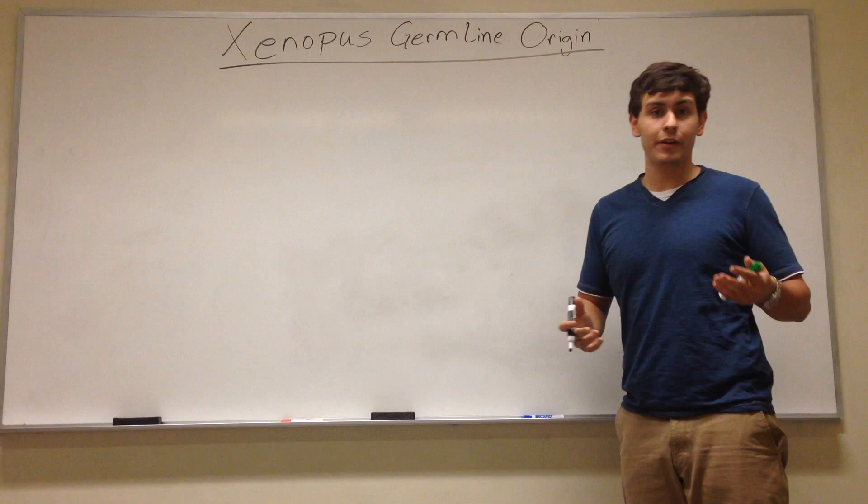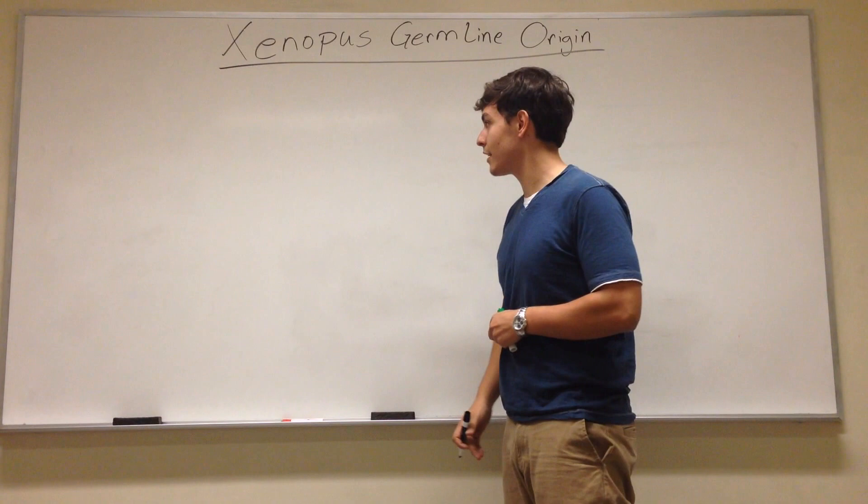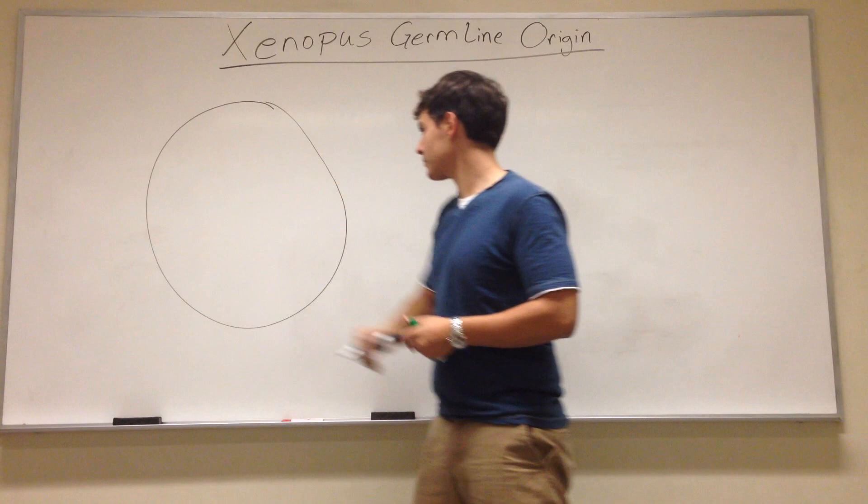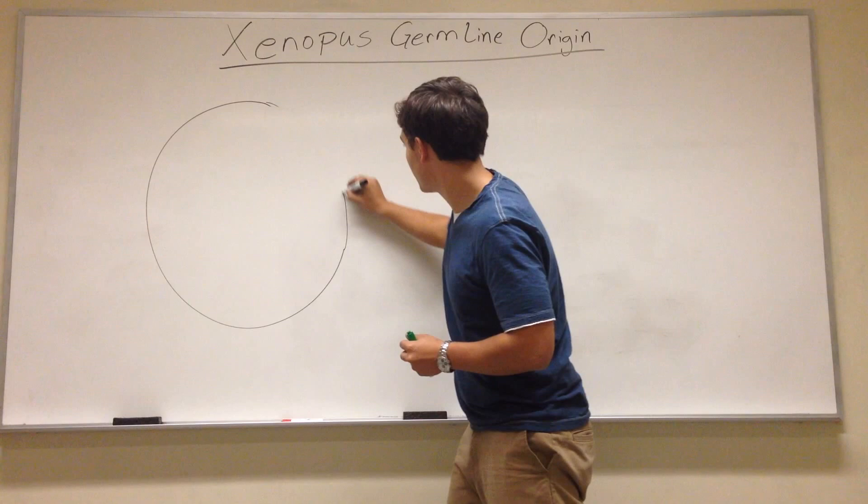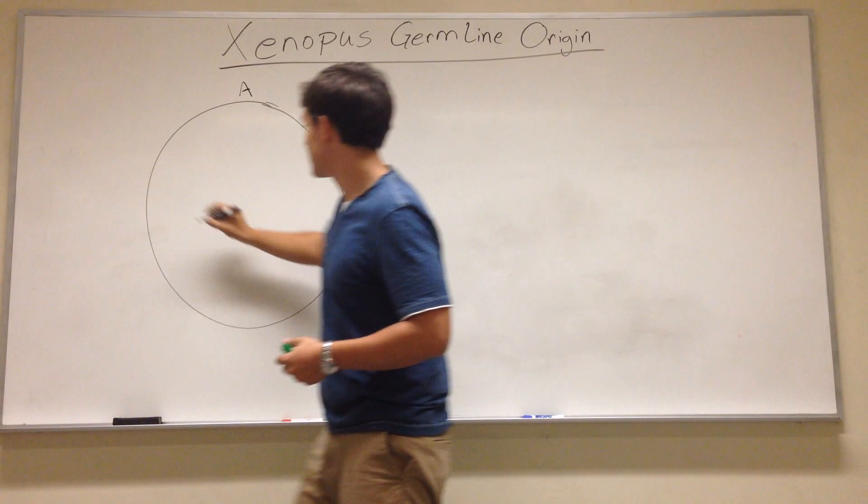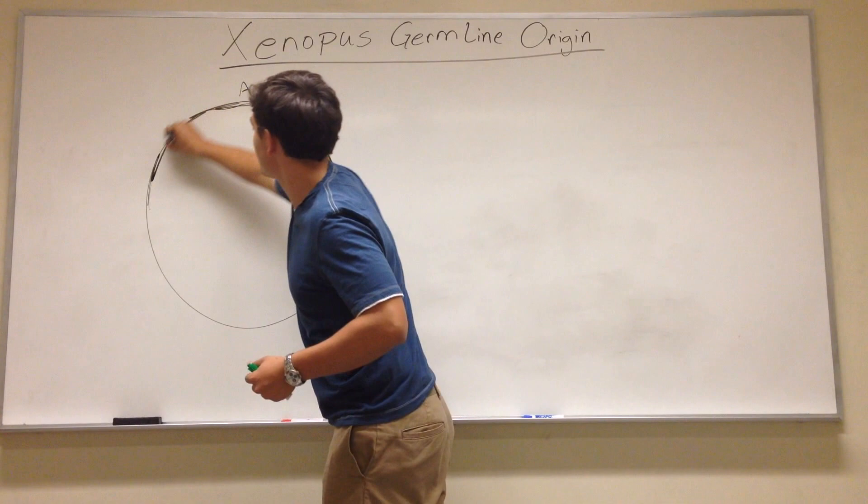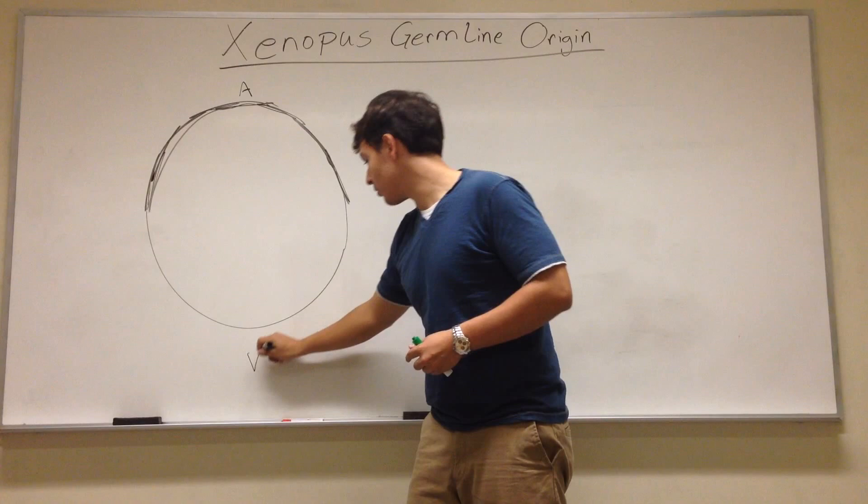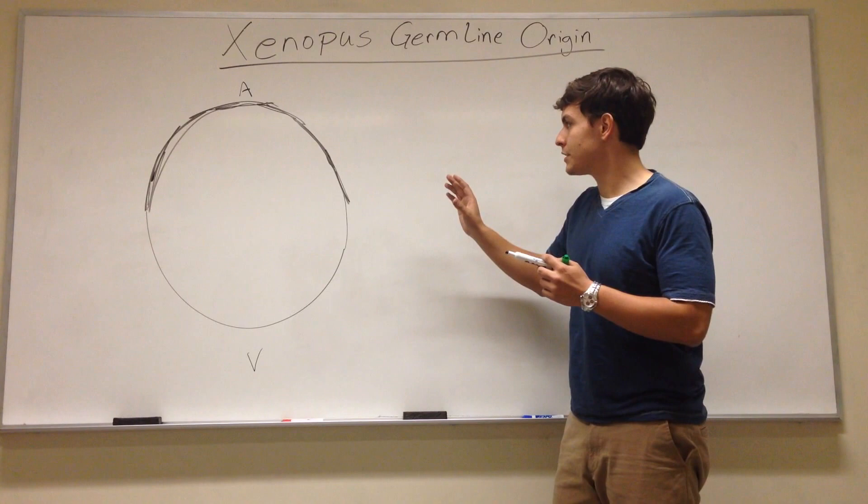So Xenopus, our frog's germline, has to do with the different areas that are set up by different determinants in the early blastula and fertilized egg. We'll start with an egg, just a round egg, and at the very beginning we're gonna have two different poles. We have an animal pole up top which is darker because it has that sunscreen that protects it from UV damage and other external things. And then down below we have the vegetal pole which is white and clear.